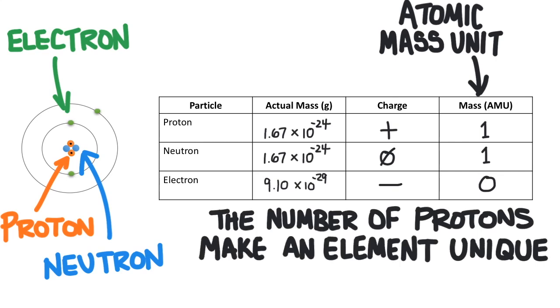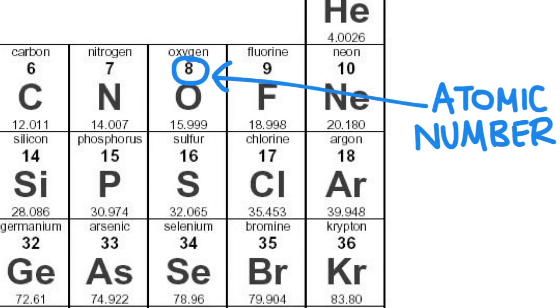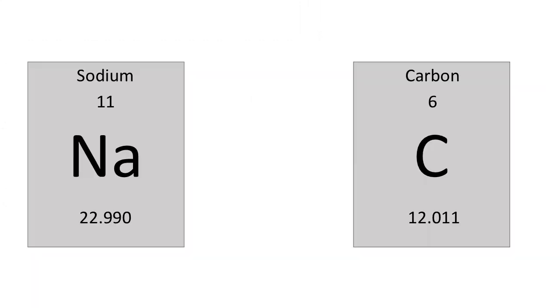Elements are distinguishable by their atoms and it's the number of protons that makes an element unique from another element. All atoms of the same element have the same number of protons. The number of protons in the nucleus is defined by the atomic number and we find that on the periodic table here. So sodium has 11 protons and carbon has 6 protons.